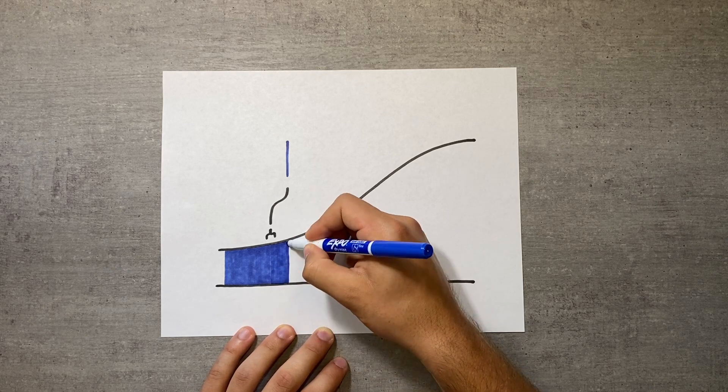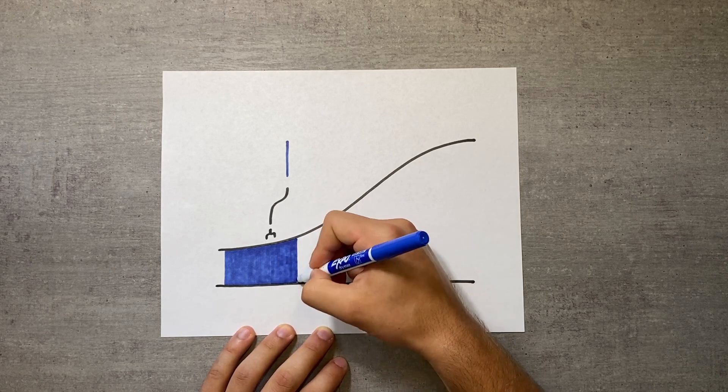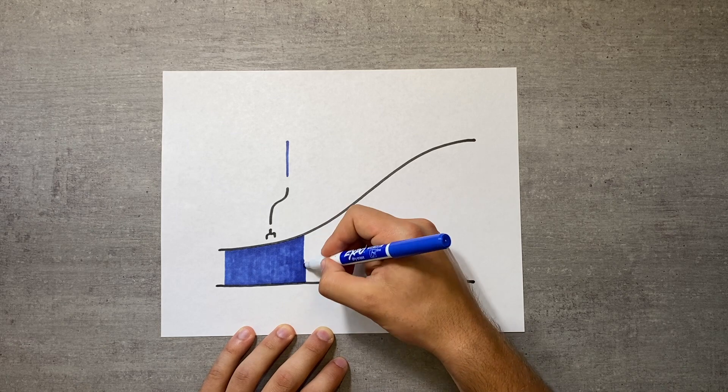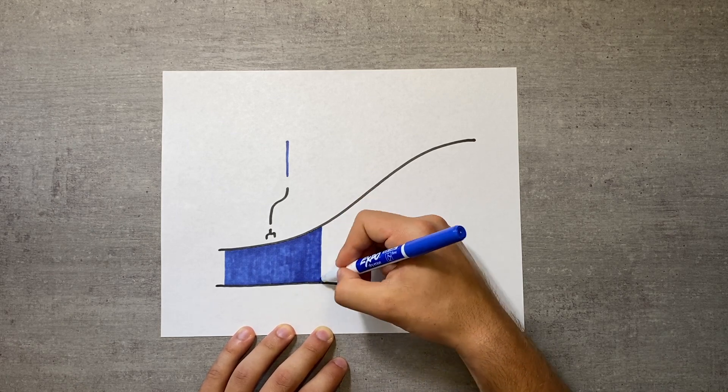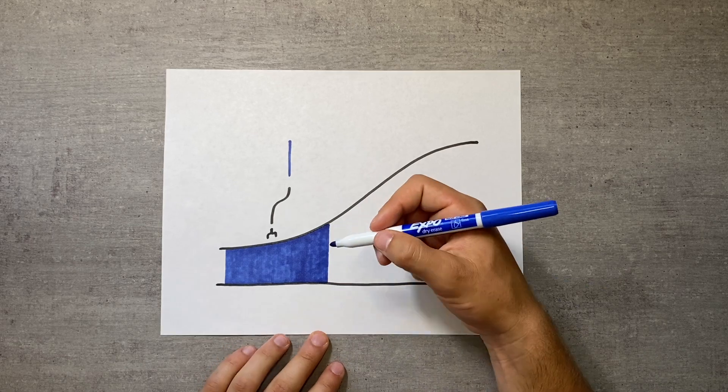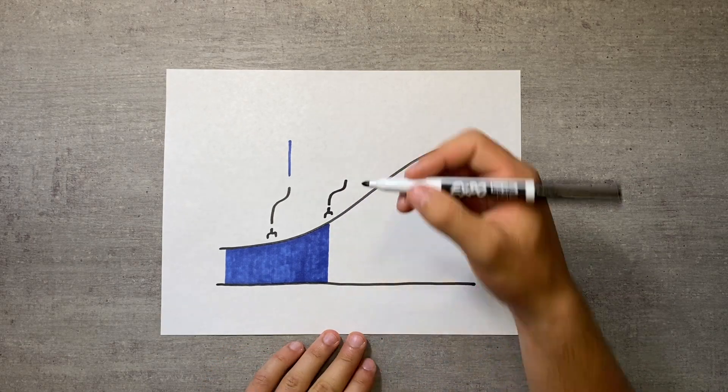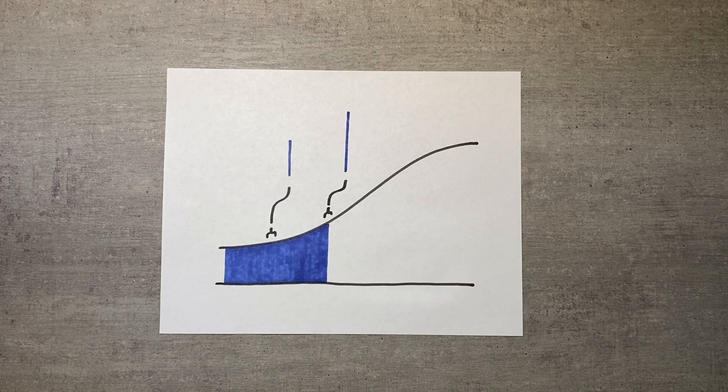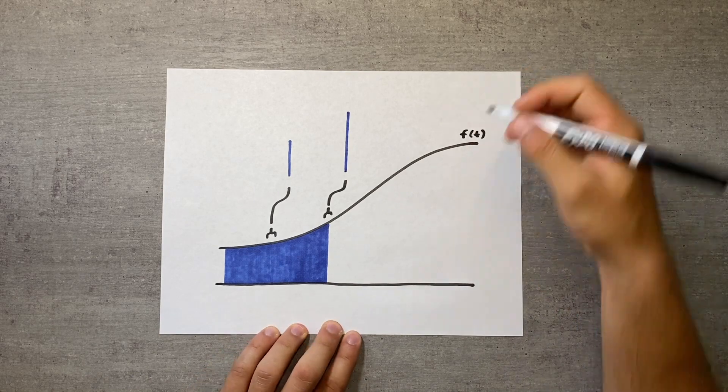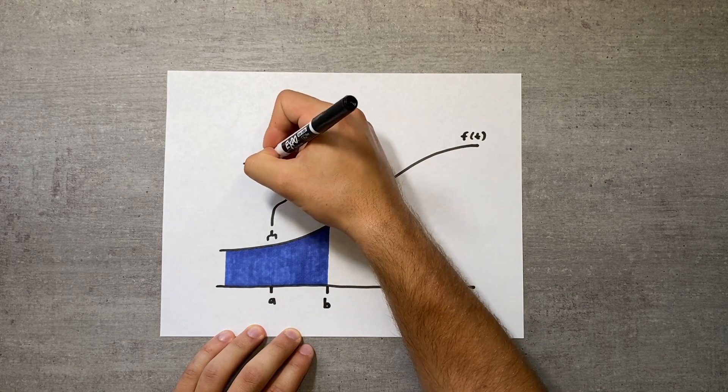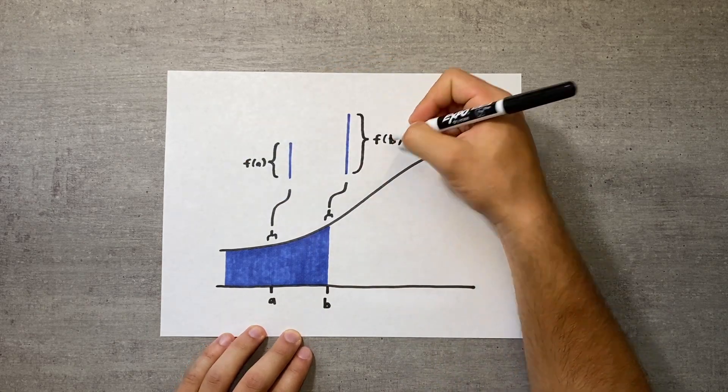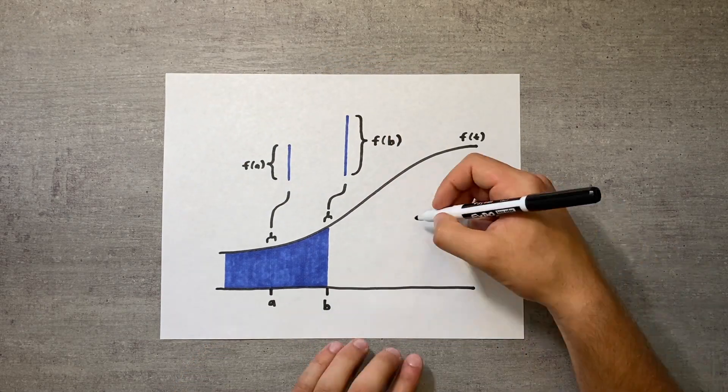Notice that as I move my hand further to the right, the space between the x-axis and the curve is increasing. The larger this space is, the more ink it takes to keep up with the growth of the area function. Specifically, the amount of area added at a given point is equal to the distance between the x-axis and the curve f, which is, in turn, equal to the curve's height, f of x. This is exactly what the fundamental theorem says, completing our proof.